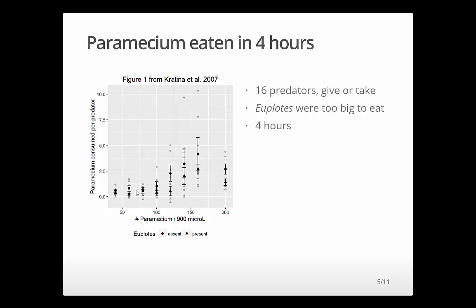Then they add, and there were also Euplotes which were too big to eat. So there were 60 Euplotes in the ones that are triangles there. The circles are without Euplotes. And they add 16 predators and then they wait four hours and then they suck everybody out and count them. Actually they kill them by adding a drop of Lugol's solution. And then they count everybody who's left.